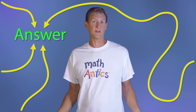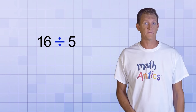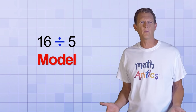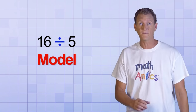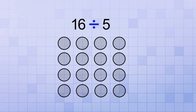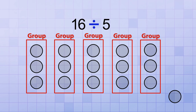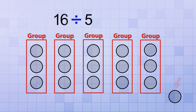In math, even when there's just one right answer to a particular problem, there's often many different ways that you could have arrived at that answer. Take division, for example. Suppose you need to find the answer to 16 divided by 5. One way is to model the problem with a simple drawing or even physical objects. You could draw 16 circles and then see what you'd get if you divided them into 5 equal groups. Notice that we ended up with 3 circles in each group but we have 1 left over.